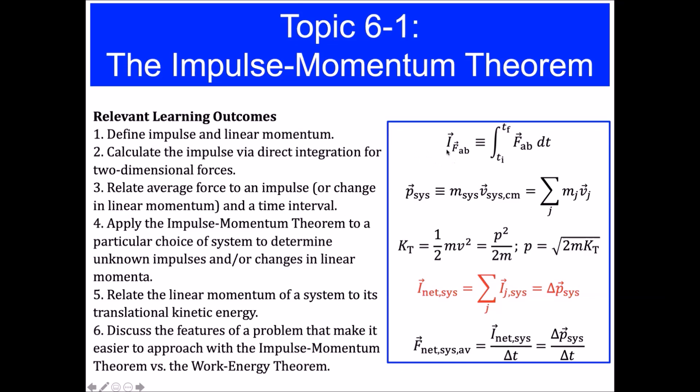Impulse I is a vector, and impulse is exerted by an external force, indicated by the subscript F vector AB, when that external force FAB acts on a system for a certain period of time over a time interval that begins at time T sub I and extends to time T sub F. So if we know what that external force is and we can integrate that force with respect to time over this time interval, what that force does is exert an impulse on our system.